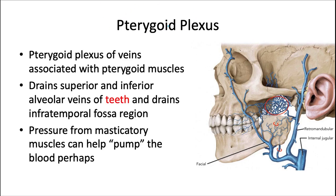The pterygoid plexus of veins earns its name because it's associated with the medial and lateral pterygoid muscles. It drains the superior and inferior alveolar veins of the teeth and drains the infratemporal fossa region. Pressure from the masticatory muscles can actually help pump this blood and cause it to move, because again there are no valves directing blood flow.